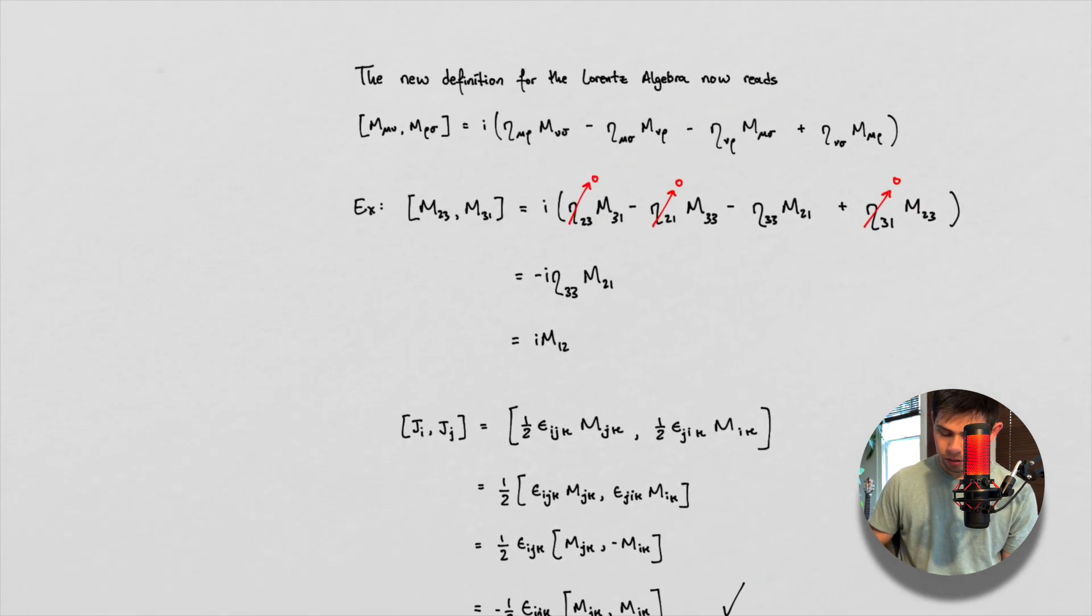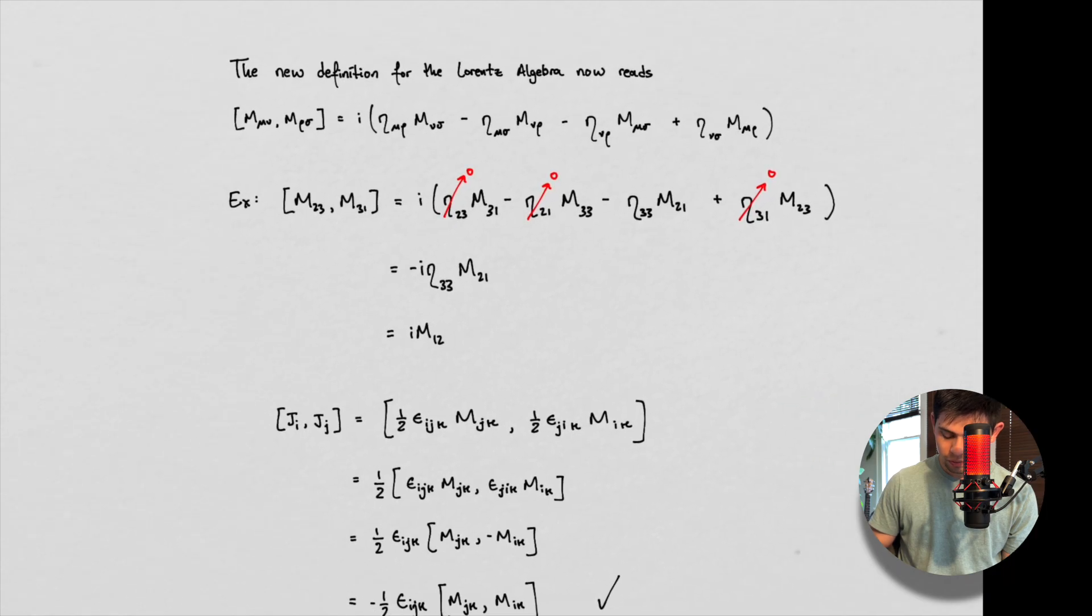Well, we now, in casting them as these M matrices, we now are sort of put in a place where we kind of have to redefine what the Lorentz algebra is. And this is it. So we're not going to derive this. Deriving this, I think, is quite tricky, actually. So I'm just going to give it to you, and then we're going to have an example here.